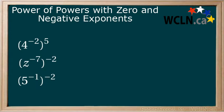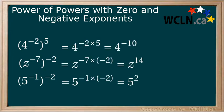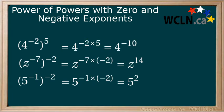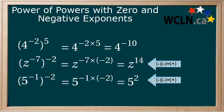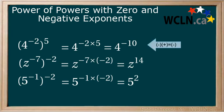Here are the solutions. You'll notice that you still multiply the powers together. The only piece that is a little bit different is the multiplication of negative numbers. Remember that two negatives multiplied together result in a positive, and a positive and a negative multiplied together result in a negative.